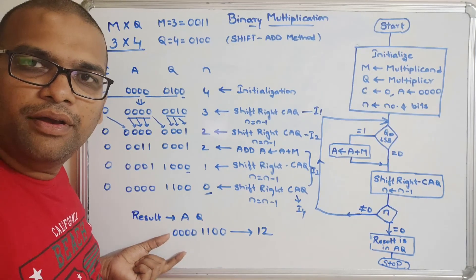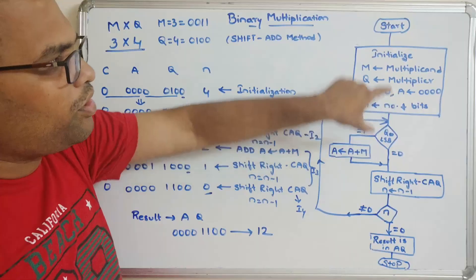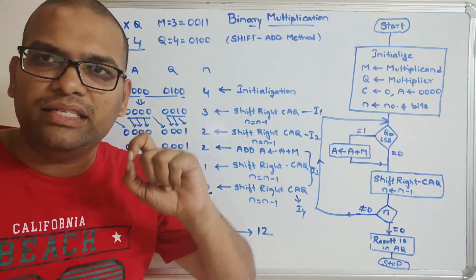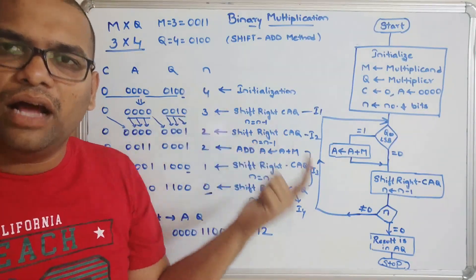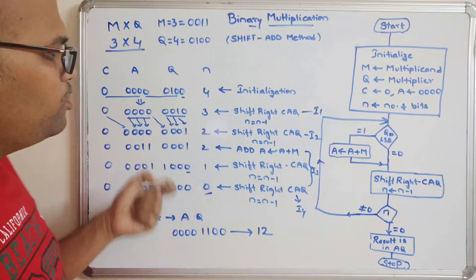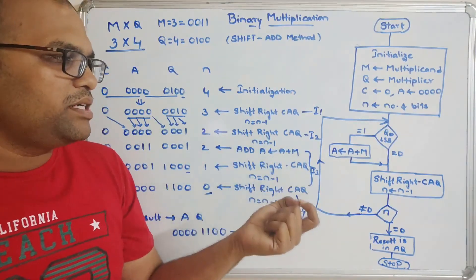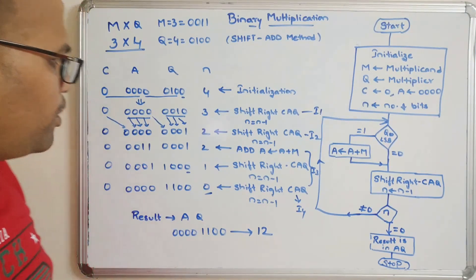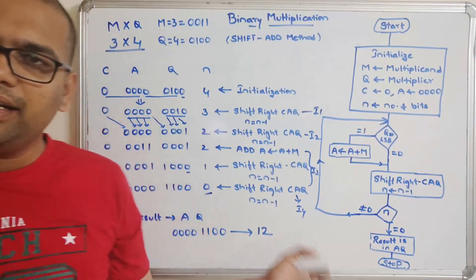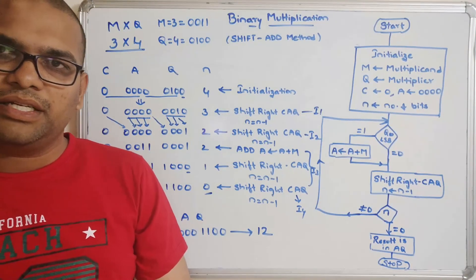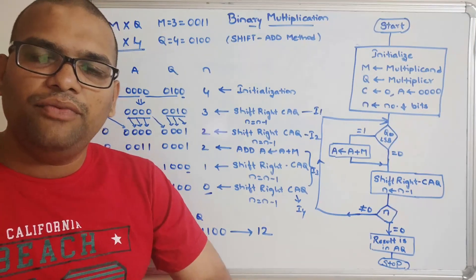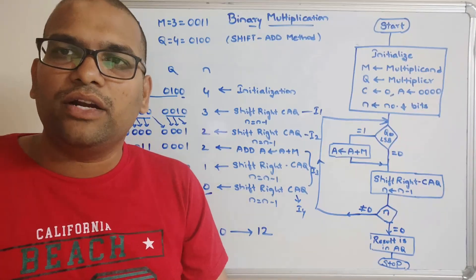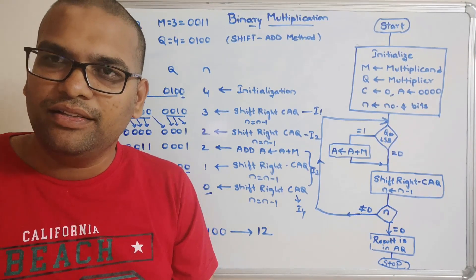If you are comfortable with this procedure, you can perform binary multiplication on any numbers, including larger ones, using just addition and shift operations. Hope you understood this procedure. If you have any doubts, feel free to post them in the comment section and I will try to clarify. If you enjoyed the session, please like, share with your friends, and don't forget to subscribe to our channel. Thanks for watching!